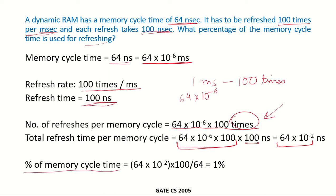So what would be the percentage of memory cycle time? This refresh time 64 × 10^-2 divided by the memory cycle time which is 64, and into 100 because we are finding the percentage.